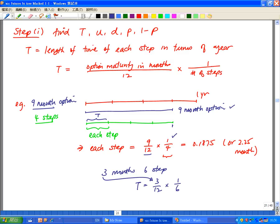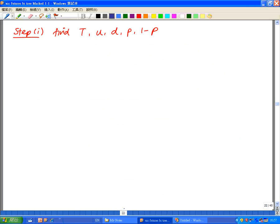So this is t, the first thing we need. Now let's look at the second thing we need. The next thing we need is u. So for u, we're looking at e to the power volatility times square root of t.